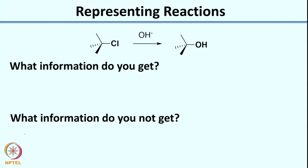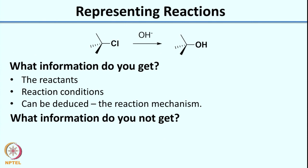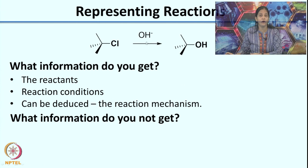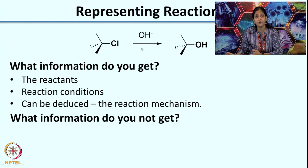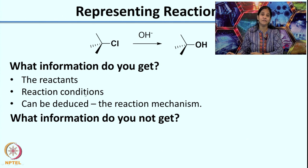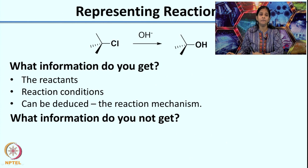The information you do get from this representation: you know what the reactants are — here the reactant is t-butyl chloride and the other reactant is OH⁻. You know the reaction conditions; in this case it is a basic reaction. Often there will also be information about the solvent and the temperature used, which is very important for understanding which mechanism is taking place. What is not immediately apparent but can be deduced is the reaction mechanism.